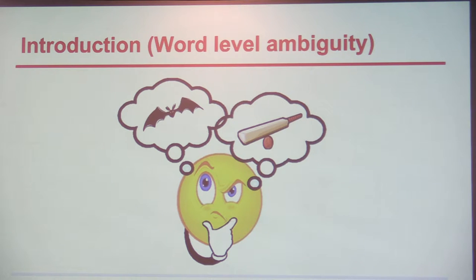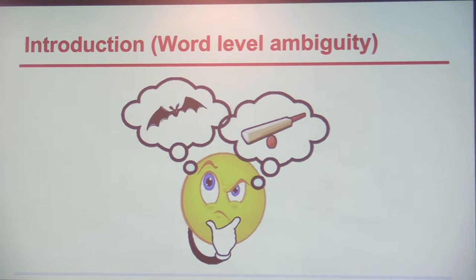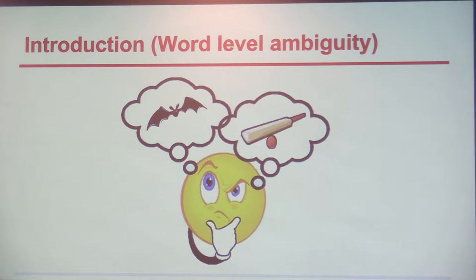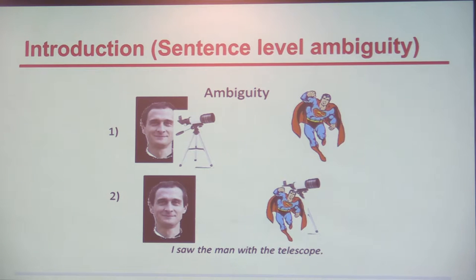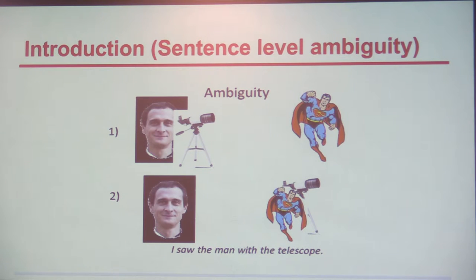Natural language processing is a field that started in the 1950s when computers were at a very beginning stage. The main task was how to make computers understand natural language. We know this problem is kind of solved at the word level — with context, we can figure out whether 'bats' refers to a cricket bat or a flying bat. But when we go beyond word level to sentence level, there is ambiguity. A classic NLP example is 'I saw the man with telescope' — depending on where you put the comma, the meaning changes entirely.